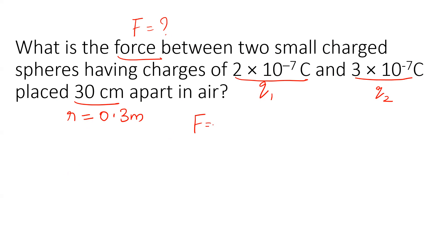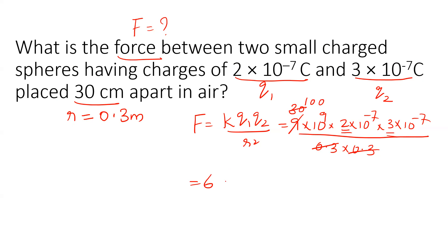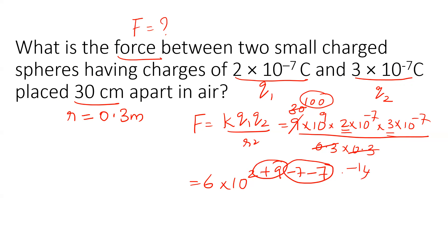Using the formula F = K Q1 Q2 / R², we substitute: K = 9 × 10⁹, Q1 = 2 × 10⁻⁷, Q2 = 3 × 10⁻⁷, divided by 0.3 × 0.3. We get 2 × 3 = 6, and combining powers: 9 + (−7) + (−7) − 2 = −3. So the answer is 6 × 10⁻³ Newton.